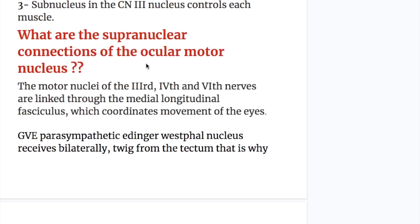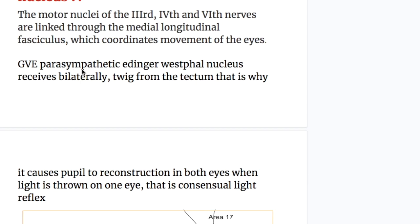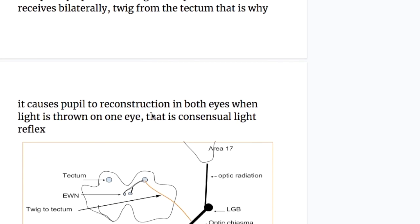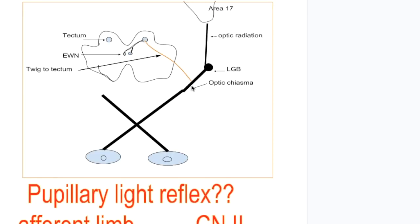What are the supranuclear connections of the oculomotor nucleus? The motor nuclei of the third, fourth, and sixth nerves are linked through the medial longitudinal fasciculus, which coordinates eye movements. The general visceral efferent parasympathetic Edinger-Westphal nucleus receives bilateral input from the tectum, which in turn receives input from the optic chiasma on its way to the visual cortex. The optic nerve forms the afferent limb of the pupillary light reflex, and the oculomotor nerve forms the efferent limb, causing constriction of both pupils because it is connected bilaterally with the tectum.